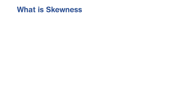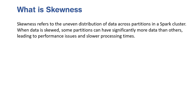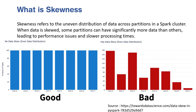Let's first understand what skewness is. Skewness refers to the uneven distribution of data across partitions in a Spark cluster. When data is skewed, some partitions can have significantly more data than others, leading to performance issues and slower processing. Spark distributes data in terms of partitions, and sometimes some partitions can have more data than others — that is what's called skewness.